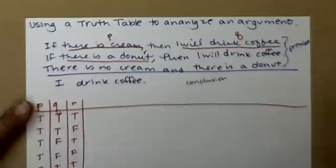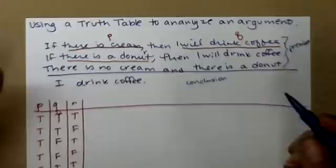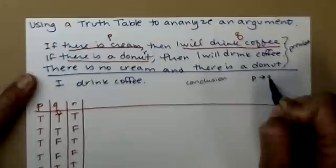So let's do a little translation. I'm going to try to squeeze it in right here so that we can be looking at it. So that first line, if there is cream, then I will drink coffee. So symbolically, that looks like this: If P, then Q.